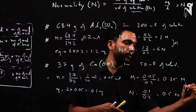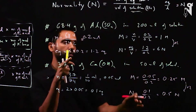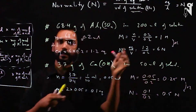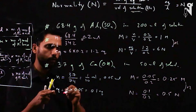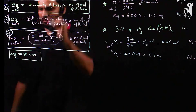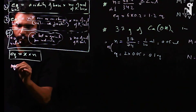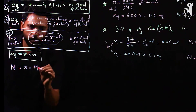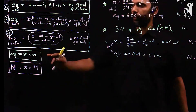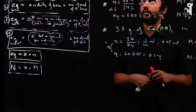In the aluminium sulfate case, normality was six times molarity; here it's two times. The number of equivalents was six times the moles there, and two times here. The volume remains the same in both expressions, so normality = X × molarity, where X is the valence factor.